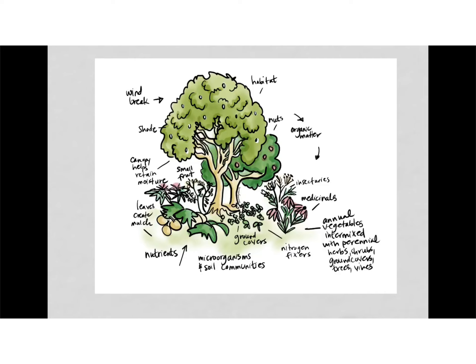A Guild tends to include perennials and annuals, and the plants will be stacked in space and time and function. You plant trees to create a windbreak, to create habitat, to provide nuts, and to provide shade for smaller plants. You do fruit trees, medicinals, and insectaries to attract pollinators and repel pests. And you do ground covers to create a living mulch and to hold moisture in the soil. So, this would be a Guild.